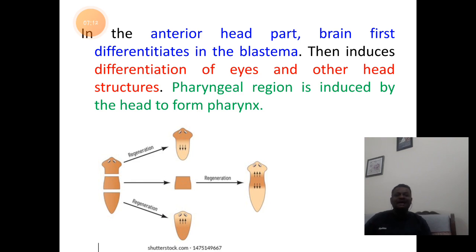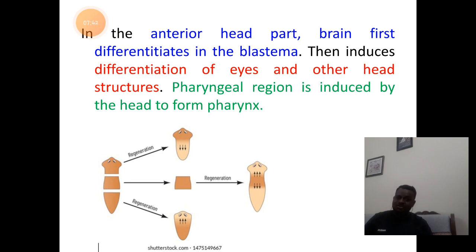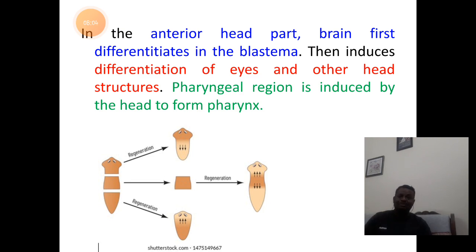Scientists have noticed that the anterior head part in planaria, forming the brain structure, forms first from the blastema. This step induces the differentiation of the rest of the parts of the head region such as the eyes, auricles, and then followed by the pharyngeal region — indicating that head formation is first, followed by the pharyngeal region. So the head region will have the dominance to control the regeneration of the rest of the body.